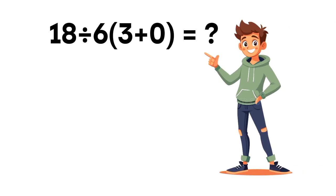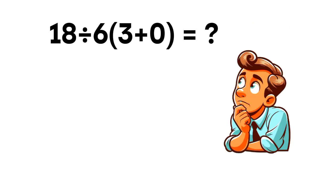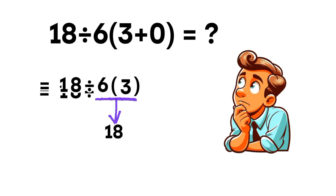Let's break this down step by step. Some people look at the expression and say, 3 plus 0 is 3, and 6 multiplied by 3 becomes 18, so 18 divided by 18 should give 1.